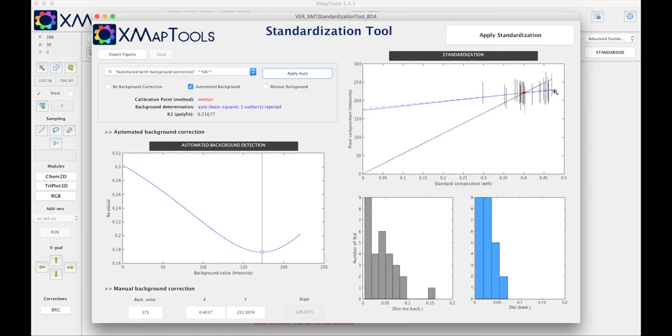If you get a restricted range of variation for titanium it would be fairly similar, but if you have a large variation range then it's important to correct for the background.